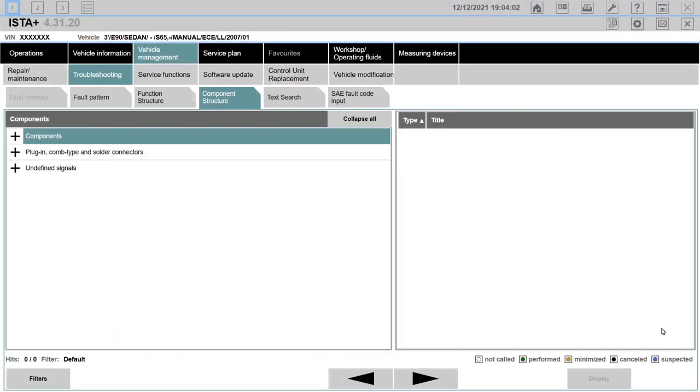You can start with the BMW wiring diagram system to see how the fuses are distributed. Let's get in ISTA D, vehicle management, troubleshooting, component structure.